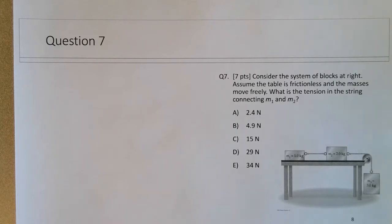Consider the system of blocks at right, or I guess below. Assume the table is frictionless and the masses move freely. What is the tension in the string connecting M1 and M2?